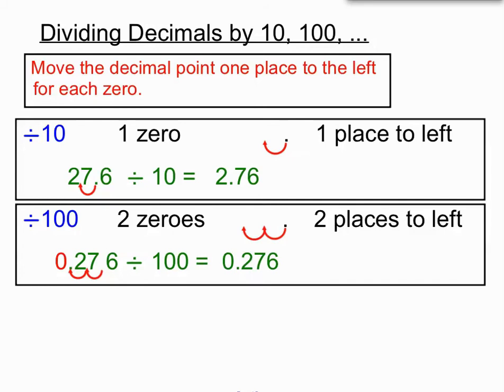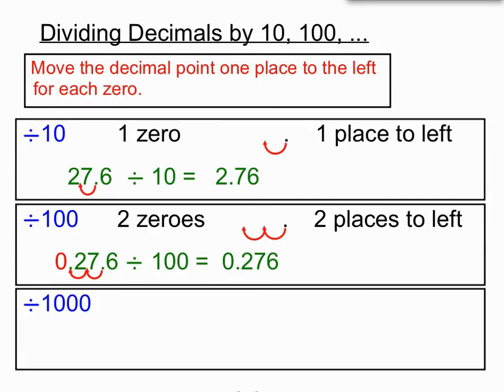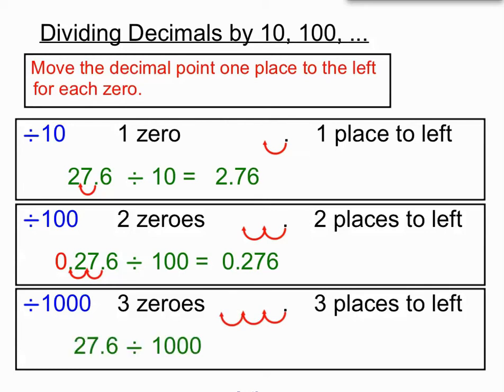If we're dividing by 1000, I think you can pick the pattern. There are three zeros. We are moving our decimal point three places to the left. Now this time, if we move our decimal point three places to the left, we actually move past a place that doesn't have a digit in it. So we're going to put in a zero in there so that we can hold that place so we know that it's moved three jumps and not just two.